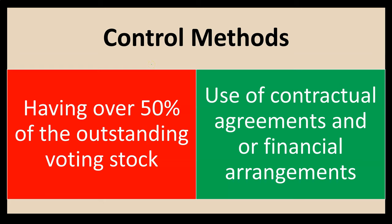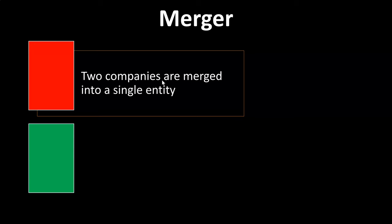It is also possible to have a controlling interest with less than 50% through contractual agreements or financial arrangements. If there's some kind of contractual arrangement that basically gives one company controlling power even without the 51% threshold, that can count. So yes, it is possible to have less than 50% and still have a controlling interest through such agreements. But the general rule would be over 51%.